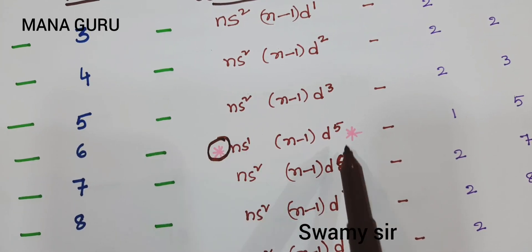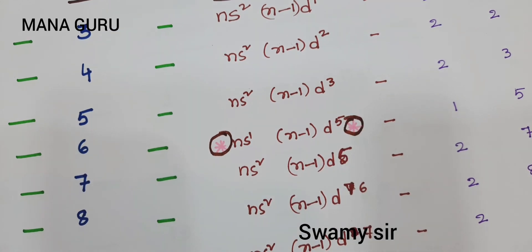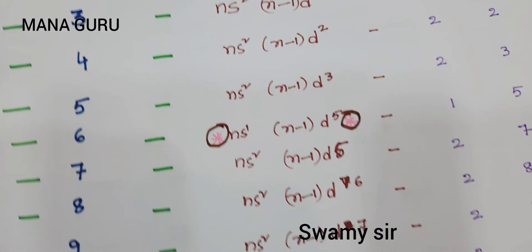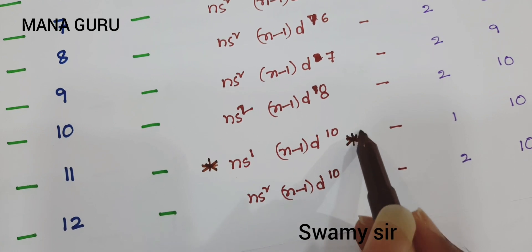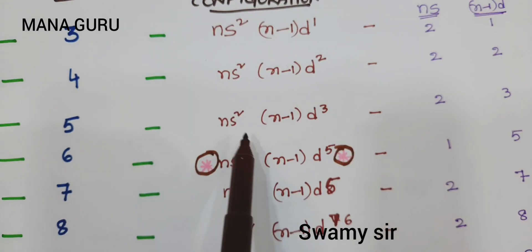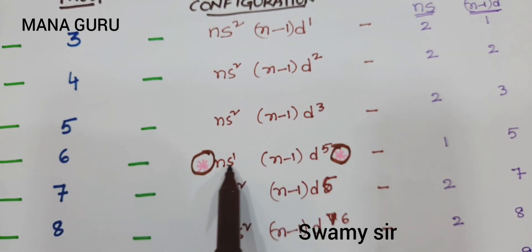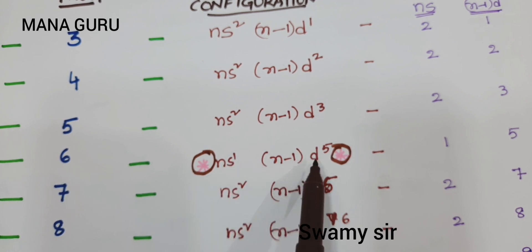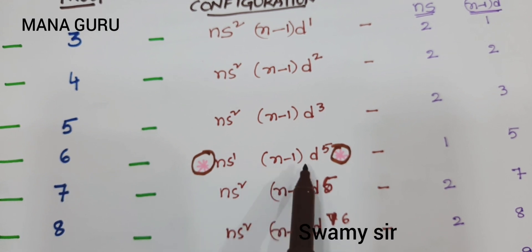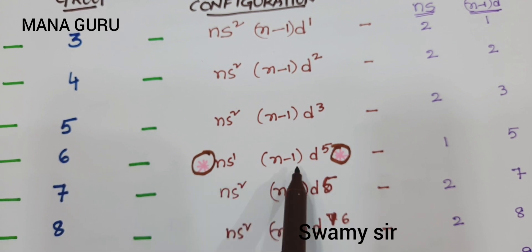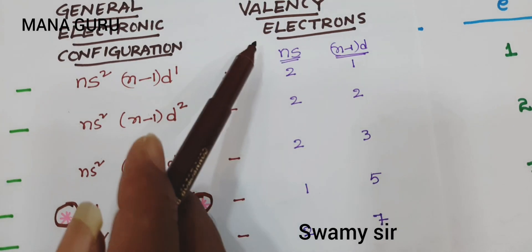A special notation is given here — it is the abnormal configuration. Those abnormal configurations will be illustrated in a separate video. The 1B group also has an abnormal configuration. After NS2 (N-1)D3, you expect NS2 (N-1)D4, but exceptionally, one electron undergoes transition to (N-1)D5. This results in NS1 (N-1)D5, which is the abnormal configuration. We will explain this concept in the stability of species video.